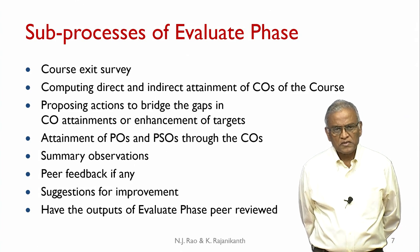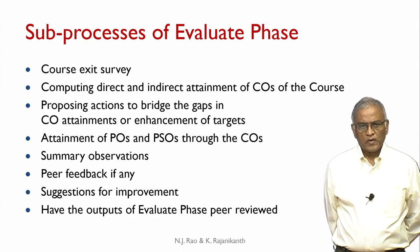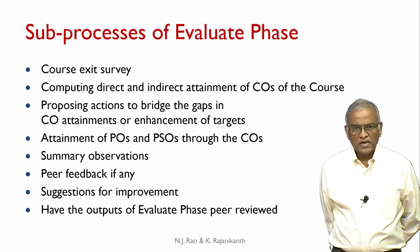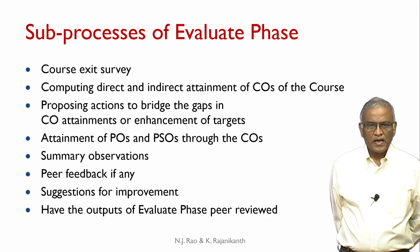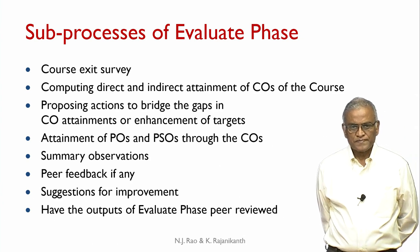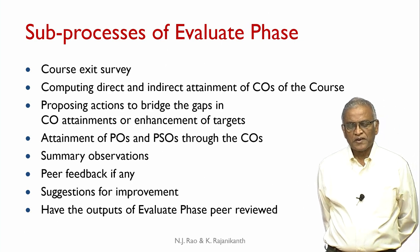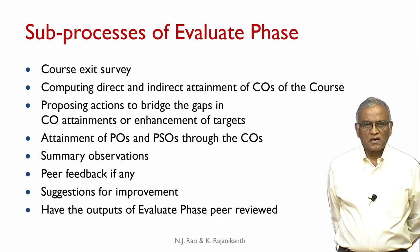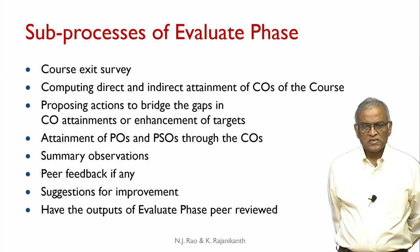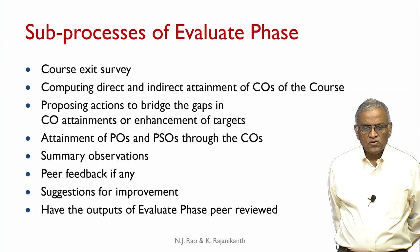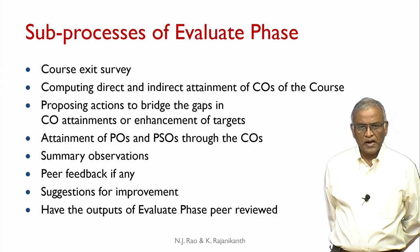The sub-processes of the evaluate phase are: course exit survey; computing direct and indirect attainment of COs of the course; proposing actions to bridge the gaps in CO attainments or enhancements of targets; attainment of POs and PSOs through the COs; summary observations; peer feedback if any; suggestions for improvement; and having the outputs of the evaluate phase peer reviewed. Many of these sub-processes are already addressed in earlier units — course exit survey, computing attainment of COs, POs, and PSOs. The new things we are really talking about are summary observations, peer feedback, and suggestions for improvement.